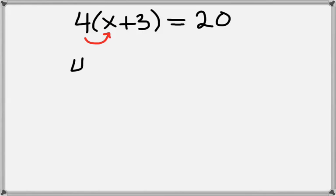So we'll multiply 4 times x, which gives us 4x, and then we multiply 4 times 3, which gives us 12. On the right-hand side, we still have 20.